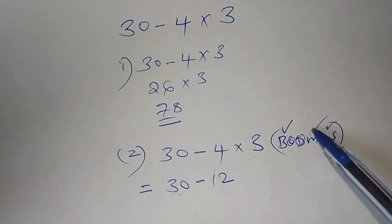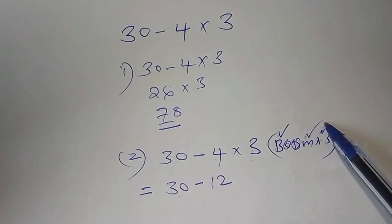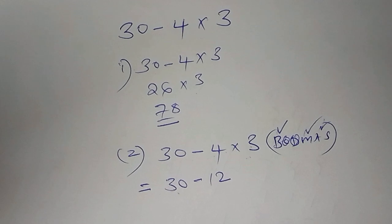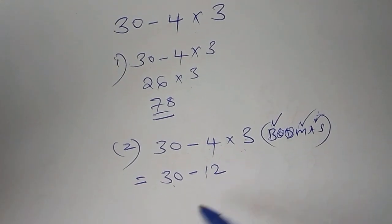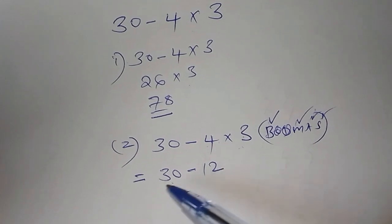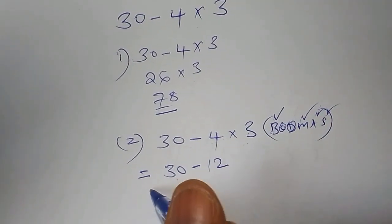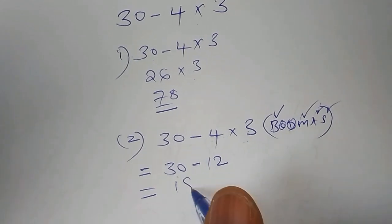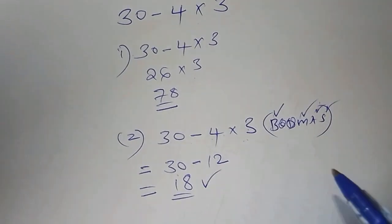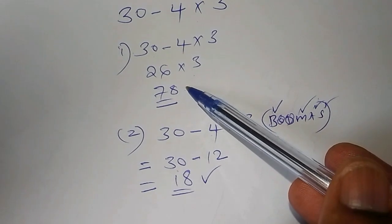So we have the multiplication, addition side. We don't have the addition sign. So we have to skip it. Then finally move to the subtraction sign. And here is the last sign. That is 30 subtract from 12. We get our final answer as 18. So our final answer is 18 and not 78.